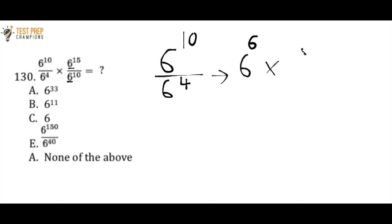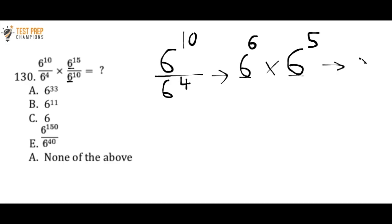So this original question simplifies down to six to the power of 6 times six to the power of 5. Here's another rule: whenever two numbers have the same base and we are multiplying them, you can simply add the exponents. So since I've got six to the power of 6 times six to the power of 5, I keep the base the same and add the exponents: 5 plus 6 is 11. So B — six to the power of 11 — is the correct answer.